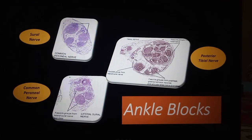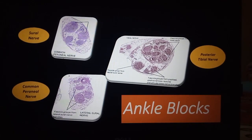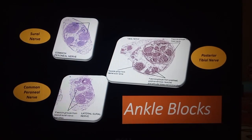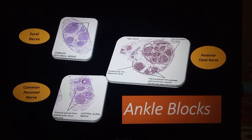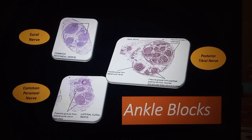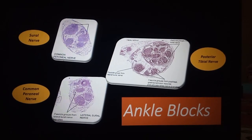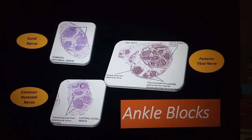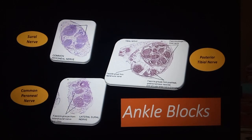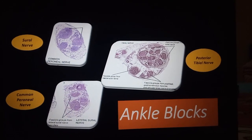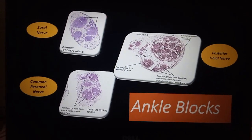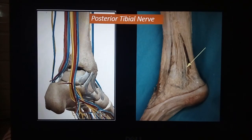We will also cover the superficial and deep peroneal nerve blocks. The saphenous nerve block can be performed by identifying the saphenous vein, or you can do a subsartorial saphenous nerve block, or an adductor canal block, or go higher up with a femoral nerve block. So ankle blocks — let's start with the posterior tibial nerve.